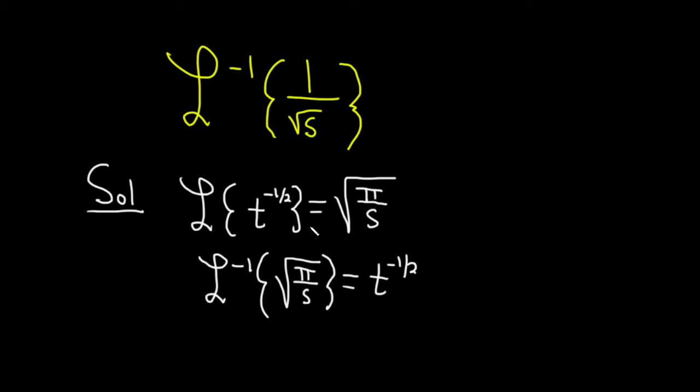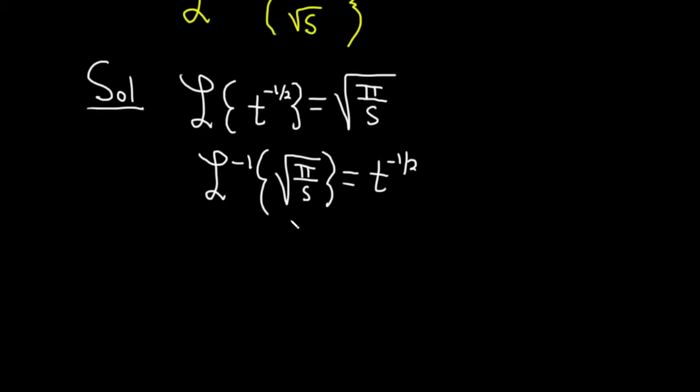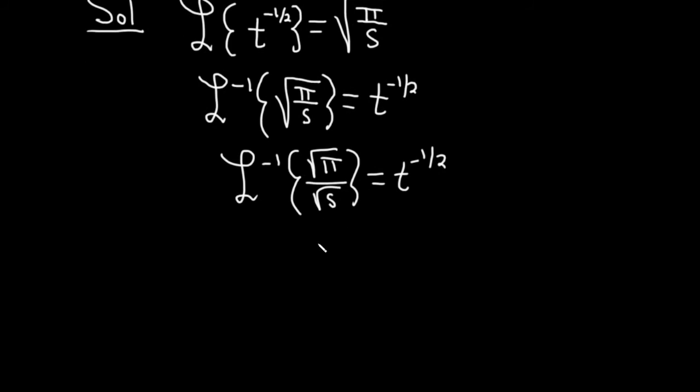Okay, so in our problem we have something very similar. We have 1 over the square root of s. Here we have the square root of pi over s. Note that you can actually write this as the inverse Laplace of the square root of pi over the square root of s. And that's equal to t to the negative one-half. Okay, so now we're going to apply this formula to our problem.